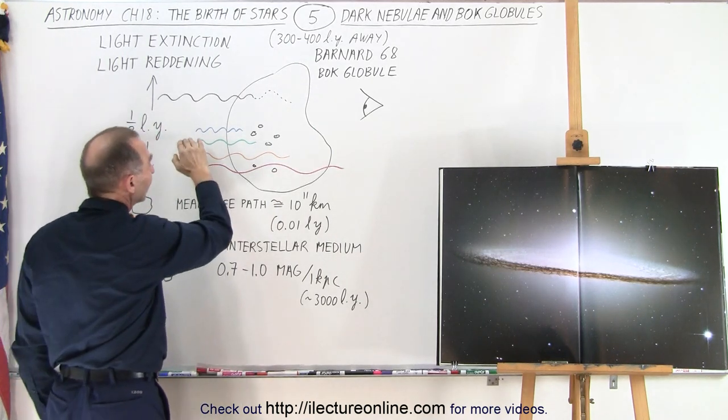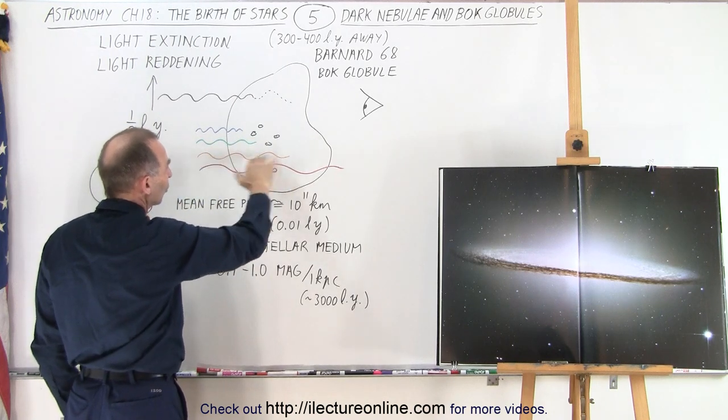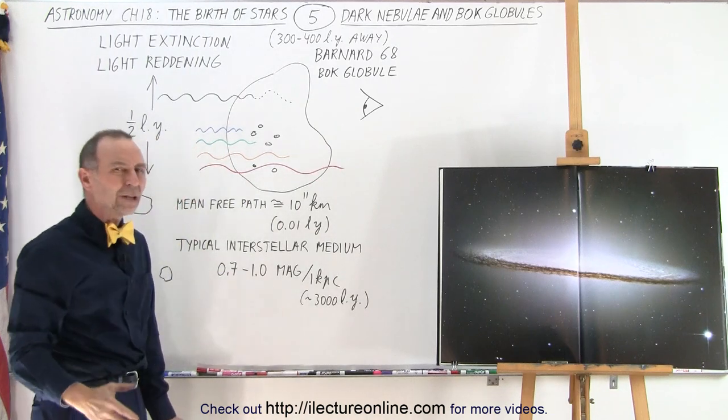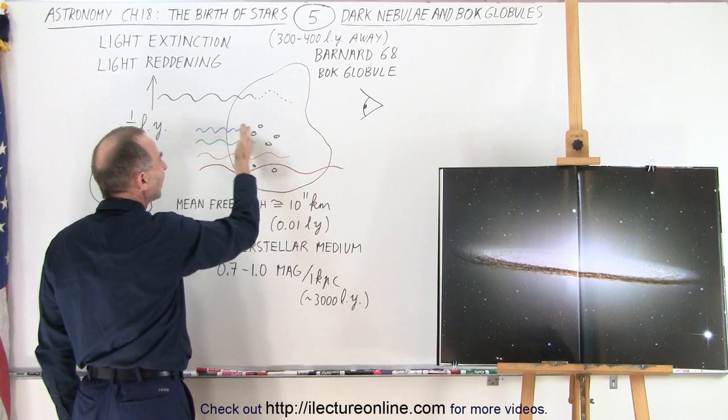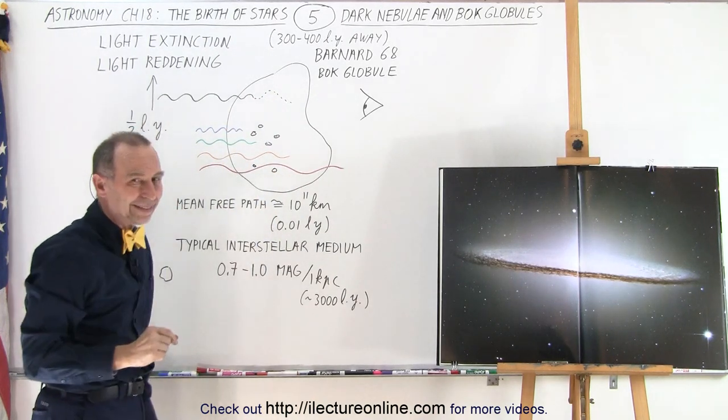Notice that the blue light gets scattered out first, the green light scatters out next, the yellow and orange light scatters out next, and then the red light makes it the farthest. Why does that light make it so far? Well, the dust particles within the nebula tend to scatter out the very small wavelengths and not so much the larger wavelengths.